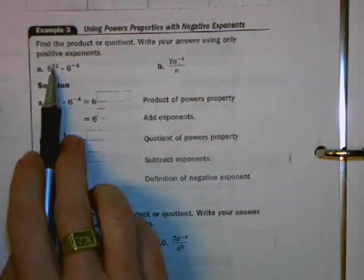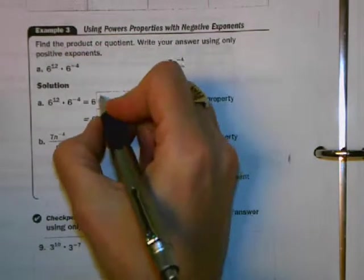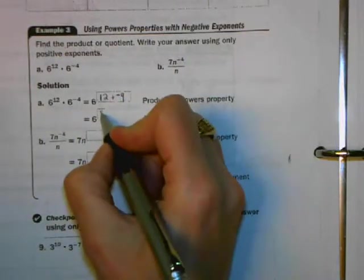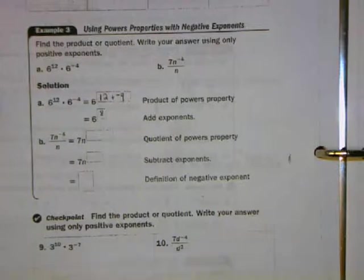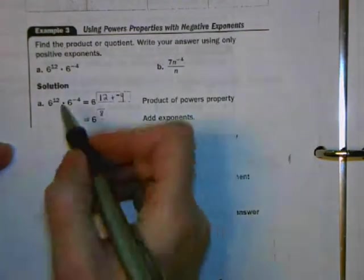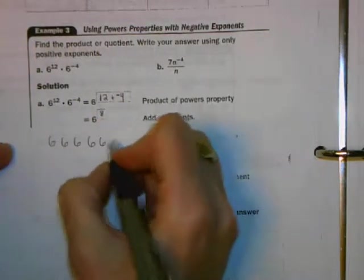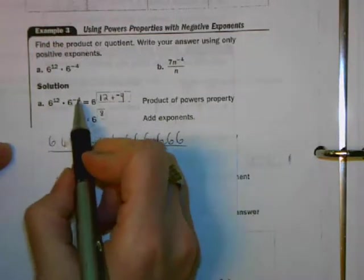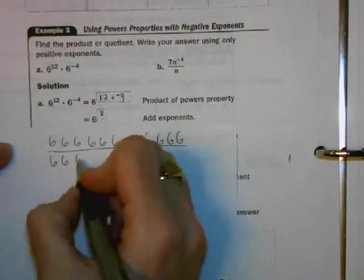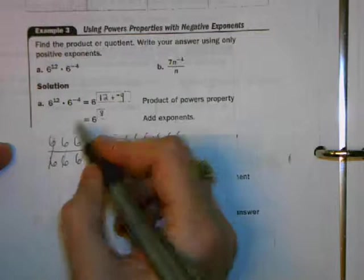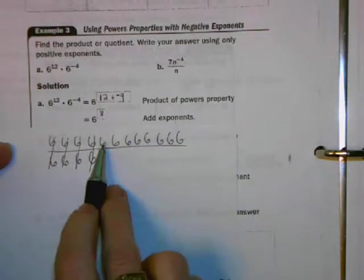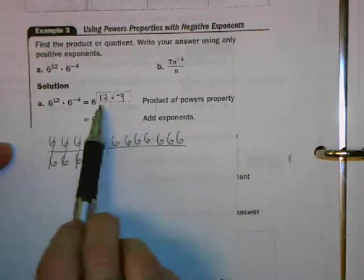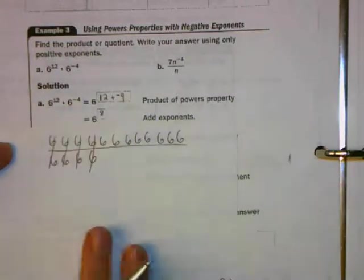So the first example we have here is 6 to the positive 12th times 6 to the negative 4th. Our rule says we can add the exponents: 12 plus negative 4. 12 plus negative 4 is the same as 12 minus 4, and that's 8. That's 6 to the 8th power. Let's do this out the long way for a minute, just to check and see if this actually makes sense. 6 to the 12th power is 6 times itself 12 times, times 6 to the negative 4th. That means that there are 4 sixes multiplied together on the bottom of this fraction, like that. And if I were to cancel out the factors of 1, 6 over 6, 6 over 6, 6 over 6, I would be left with 6 to the 1, 2, 3, 4, 5, 6, 7, 8th power. So it looks like the properties that we learned about how to deal with exponents when you're multiplying the numbers with the same base still work even if the exponents are negative.